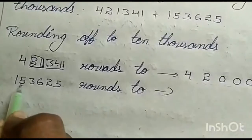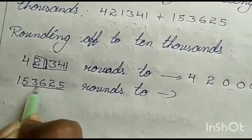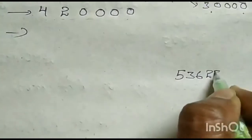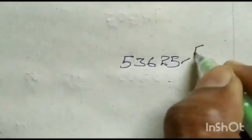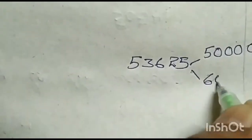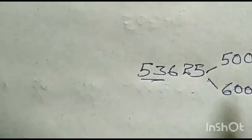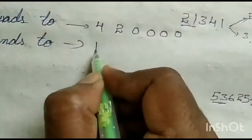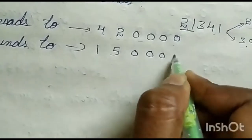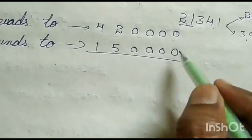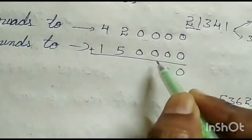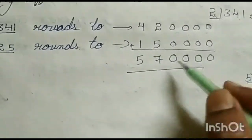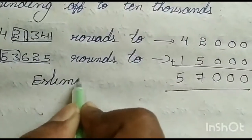The next number is 1,53,625. We check 53,625. Is it nearest to 50,000 or 60,000? It is nearest to 50,000. So here we write 1,50,000. Now the addition: 0 plus 0 is 0, 0 plus 0 is 0, 0 plus 0 is 0, 5 plus 2 is 7, 4 plus 1 is 5. The estimated sum is 5,70,000.